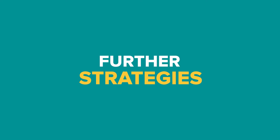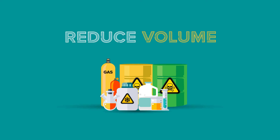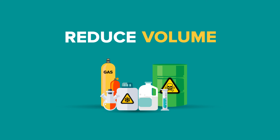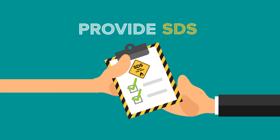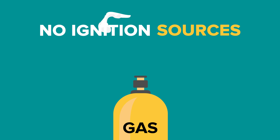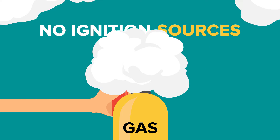Step 10: Here are some further strategies to use at your school. Reduce the volume of chemicals and ask for an SDS before purchasing any new chemical. Prevent access to cleaners' cupboards, maintenance sheds and other storage areas by unauthorised staff, students or members of the public. Ask contractors to provide current SDSs for chemicals that they use or store on site and ensure there are no ignition sources in areas where dangerous goods are stored.